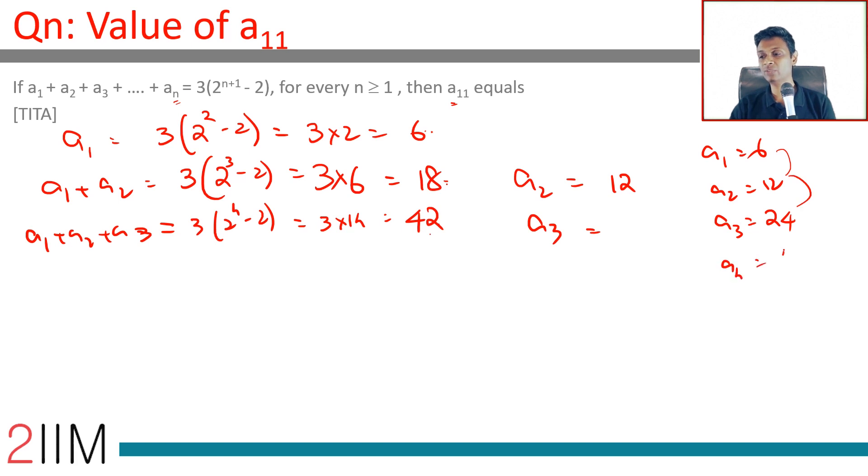You can clearly see the pattern: a₄ will be 48, a₅ will be 96. This is 3 into 2 power 5, 3 into 2 power 4, 3 into 2 cube. So a₁₁ is 3 into 2 power 11, and a₁ is 3 into 2 power 1.